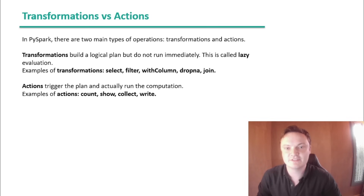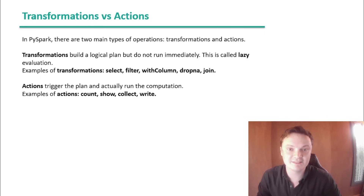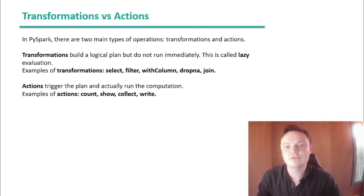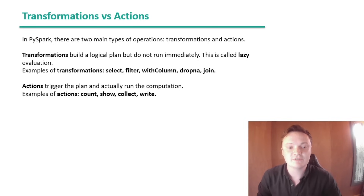Transformations versus actions. In PySpark, there are two main types of operations: transformations and actions. Transformations build a logical plan but do not run immediately — this is called lazy evaluation. Examples of transformations include select, filter, withColumn, drop, dropNA, and join.